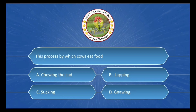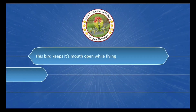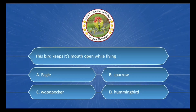Next question: This is the process by which cows eat food. The options are: A. Chewing the cud, B. Lapping, C. Sucking, D. Biting. The correct answer is Option A: Chewing the cud.